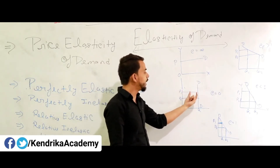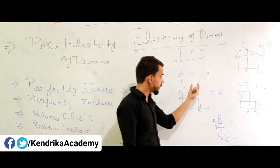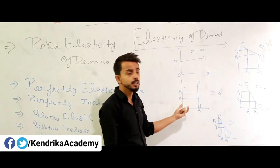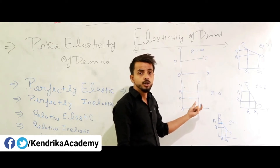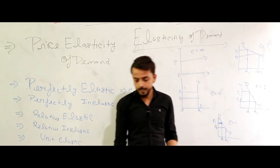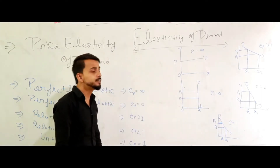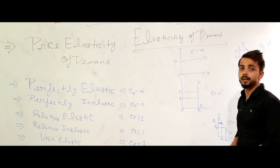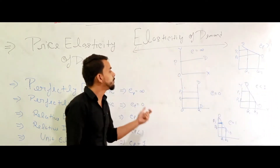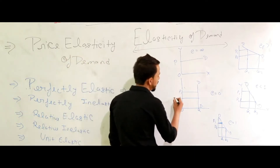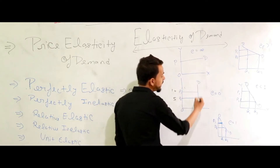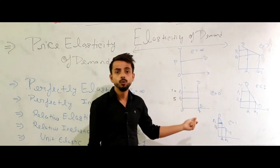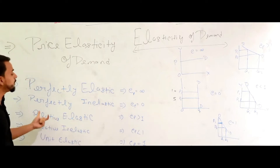For example, see picture 2. At price P1, demand is not changing; at price P2, demand is still not changing. It means there is a change in price but no change in demand. This shows ep equals zero — elasticity of price is zero because demand is not changing due to the change in price. For example, if the price changes from 5 to 10, demand remains the same at Q1. This is shown as ep equals zero.